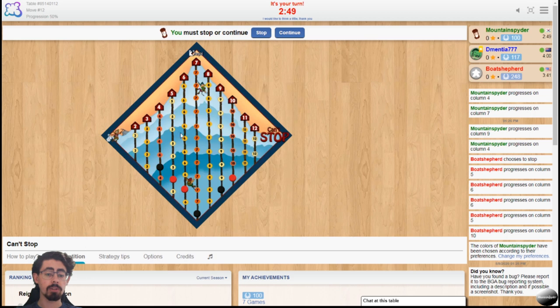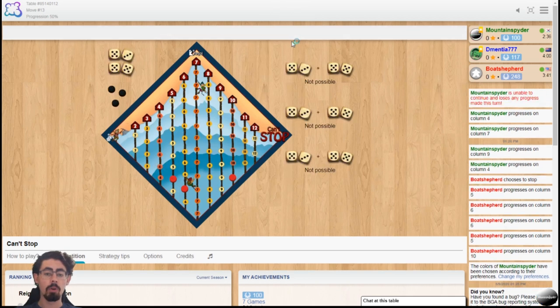If I choose to stop my progression, then I replace these black tokens with my colored tokens. And then from there on, on my next turn, I can then progress again from these tracks or start a new one. So I think I can push my luck and roll again.